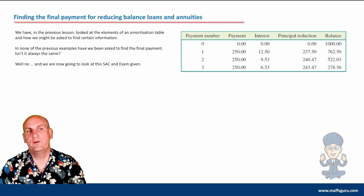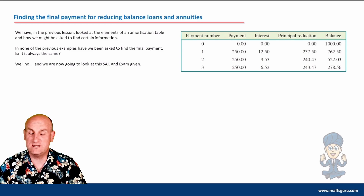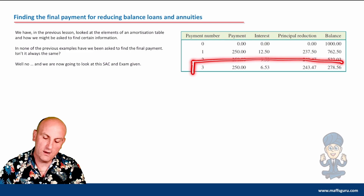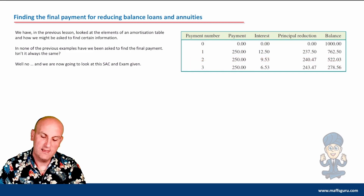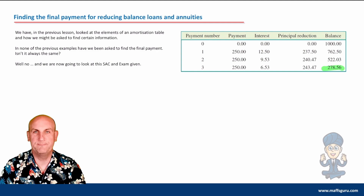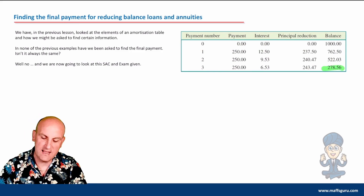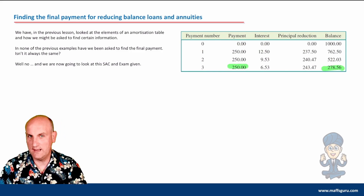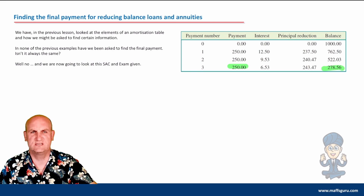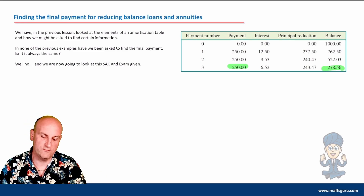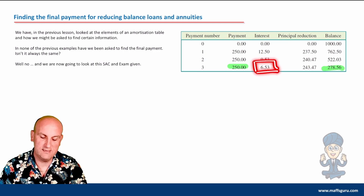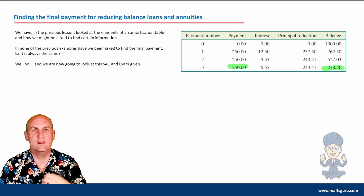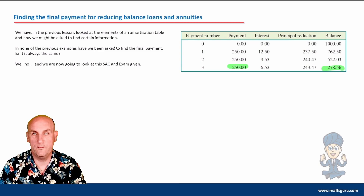In many cases you're going to want to find the final payment for reducing balance loans and annuities. In this situation we've been given four lines of an amortization table and it's telling us that after effectively three payments there is $278.56 left. The question is: will I have enough to make a final payment? If I pay another $250 will it clear the loan? A lot of people say yes because 250 is less than 278.56, but don't forget we also have to add on interest.